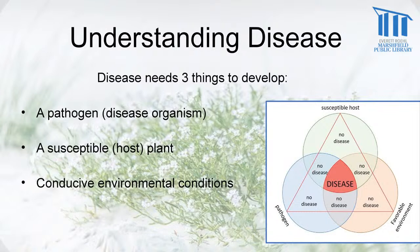And then you also need conducive environmental conditions. That means if the host and the pathogen need, let's say, wet conditions or high humidity, and that occurs, you will probably get the disease. If, however, we have a summer like this year that's pretty dry and hot, we've had a lot less diseases of plants this year than some other years when we've had more rain, more wet, and higher humidity.